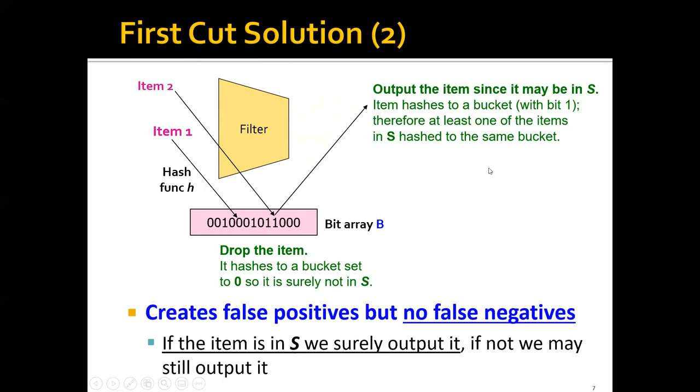One thing to note is that this algorithm can actually create false positives, but it will not create false negatives. So basically, we will have 100% recall. Why is this? This is because if the item is in S, then the corresponding hashed bit would definitely be set to 1. Therefore, when it comes from the stream, we will surely hash the item to a bit 1, and we will certainly output this item. So we will have no false negatives.